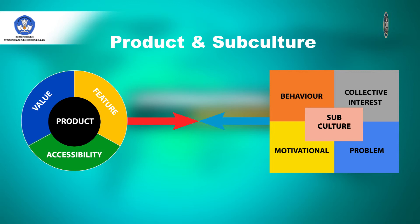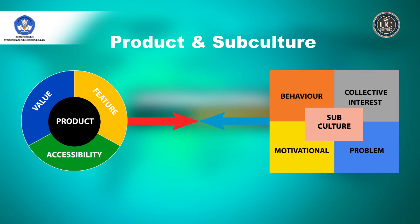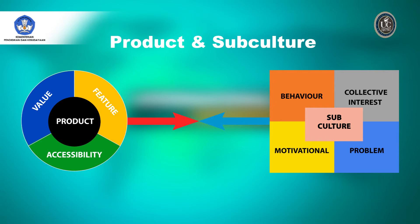Pada sisi kiri adalah sisi produk, di sebelah kanan adalah sisi subkultur. Di sisi produk ada value, feature, dan accessibility. Dapat dilihat bahwa produk itu tidak lepas dari tiga hal ini.